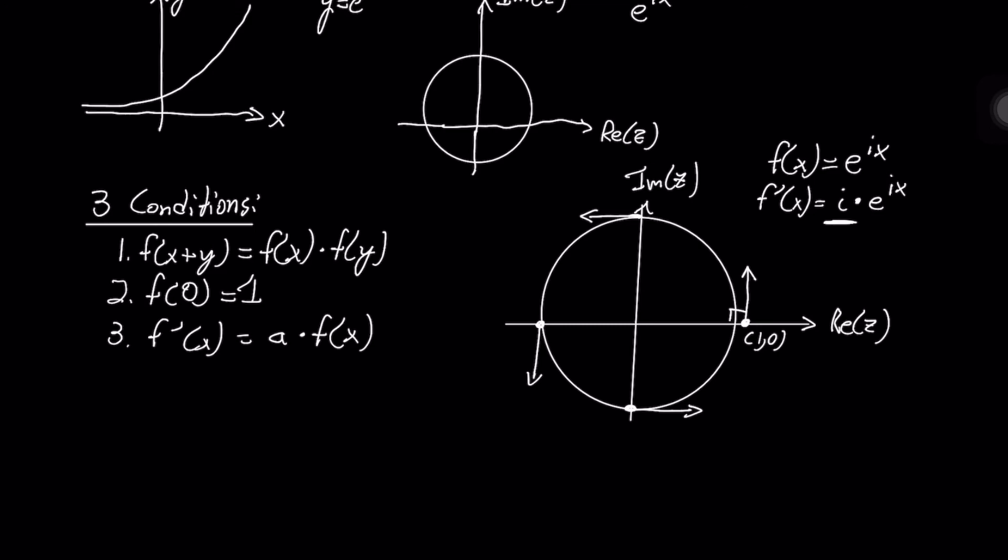So that was just a quick overview of why e to the ix traces out a circle in the complex plane. Thank you.